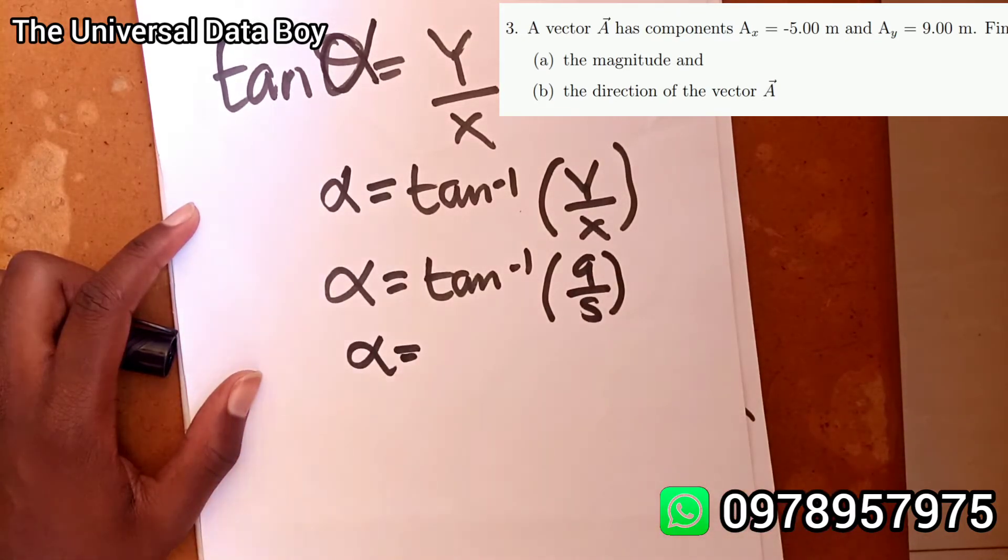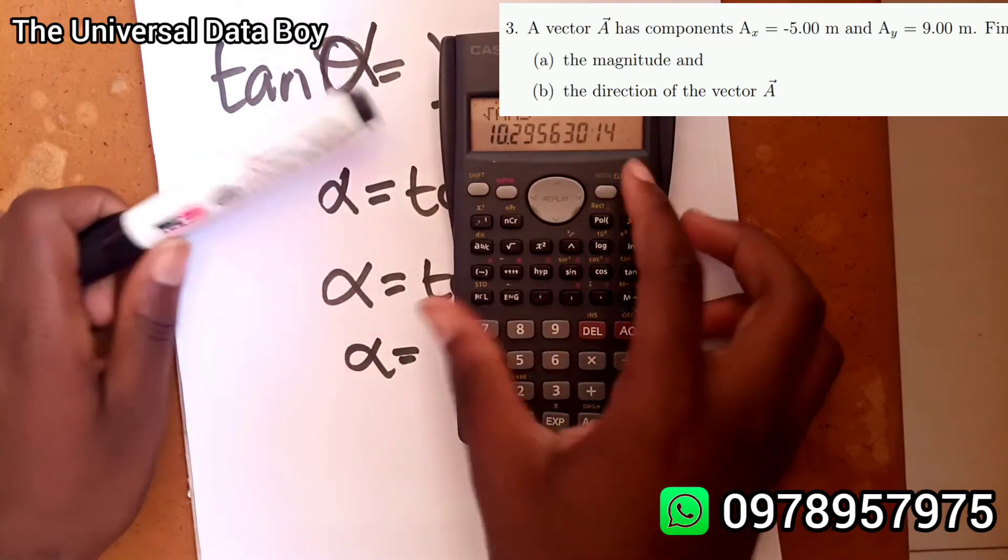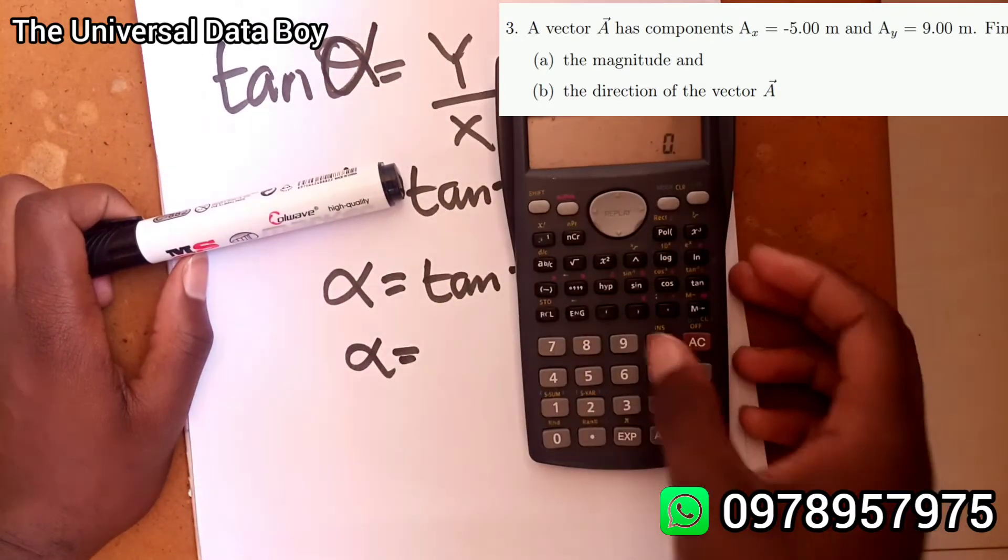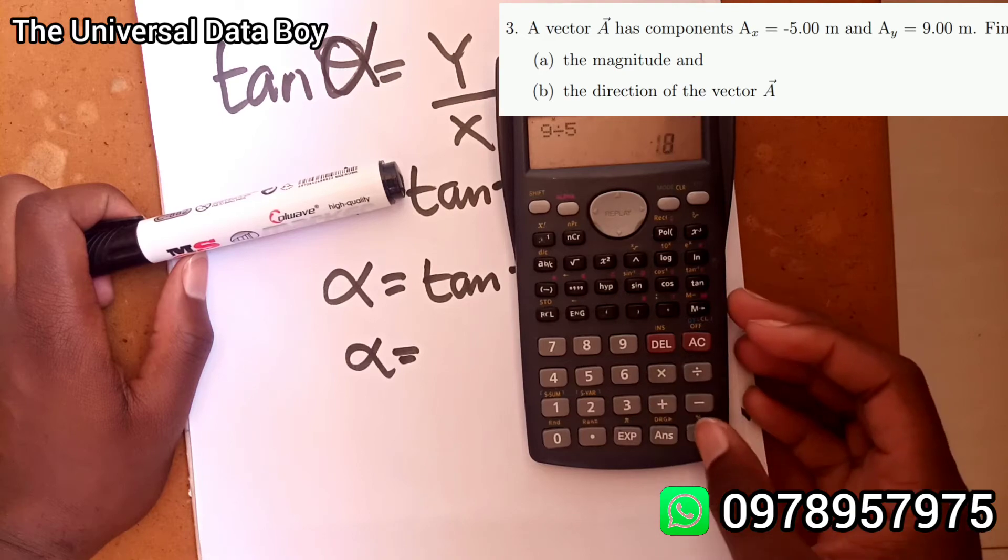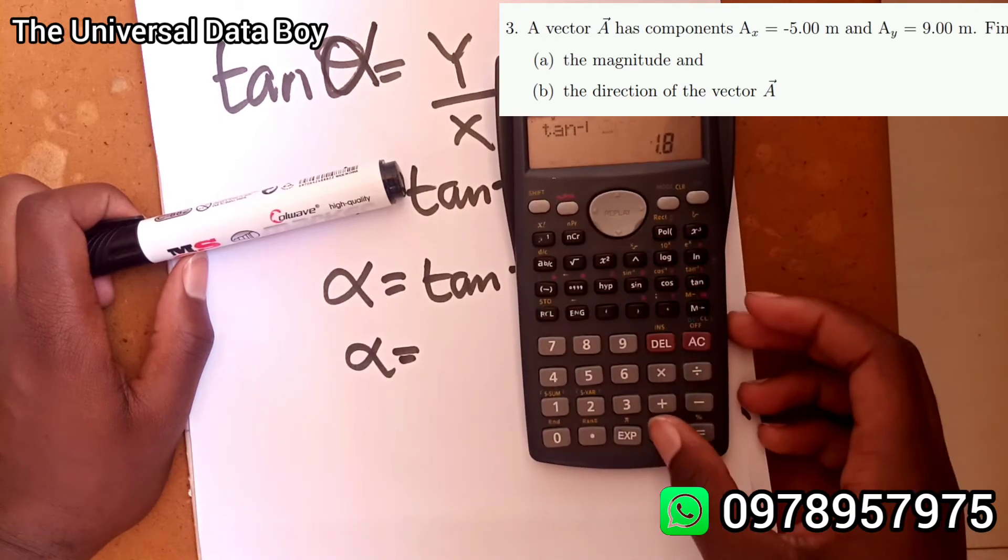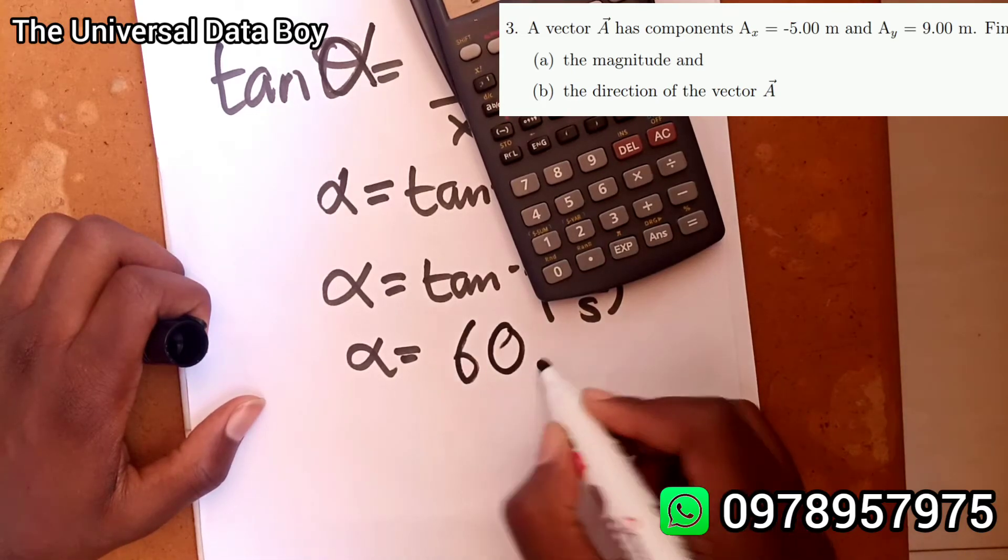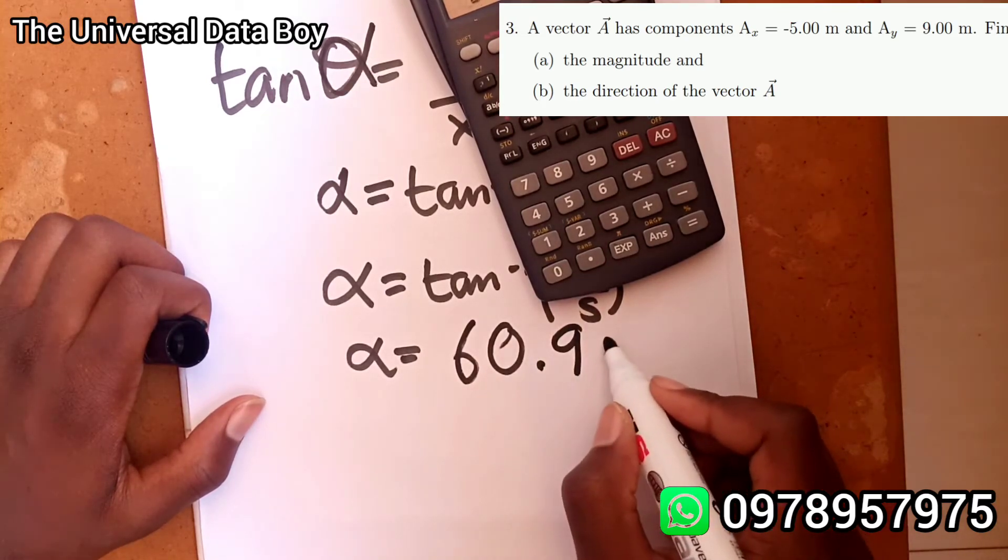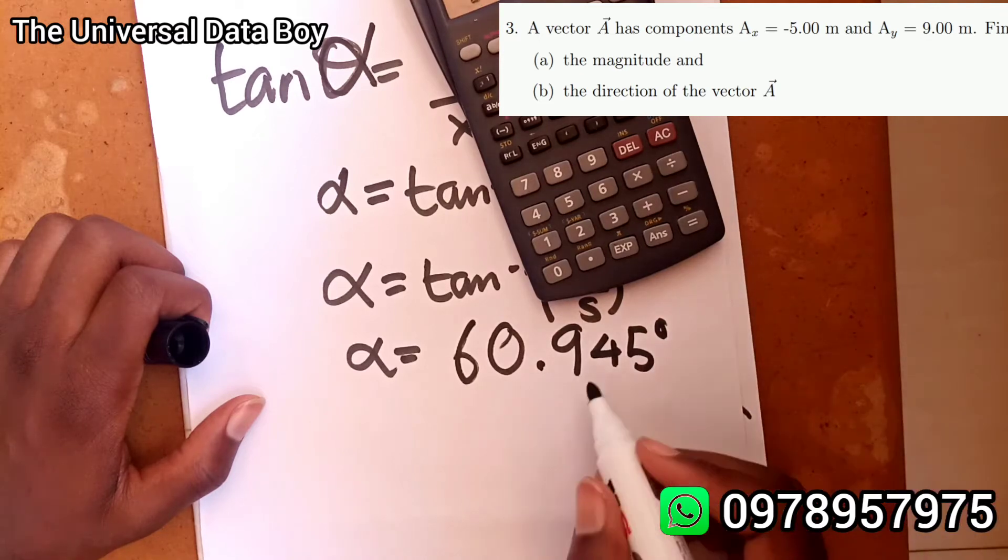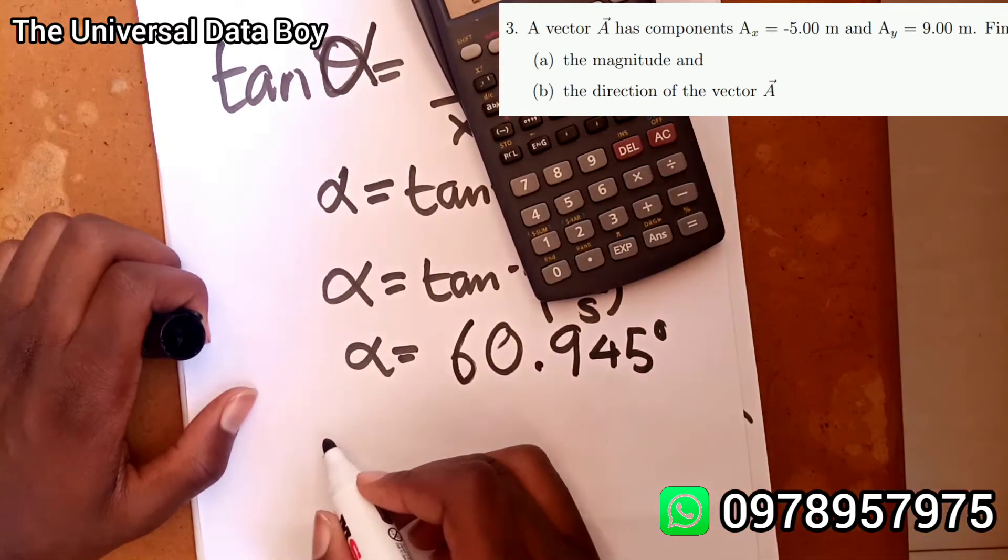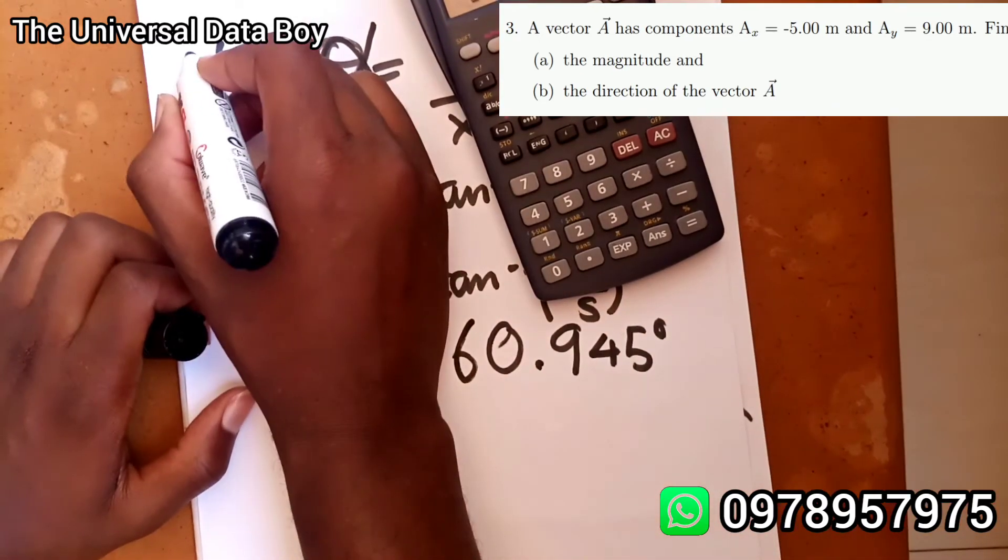Alpha is going to be equal to, we can get our calculator and punch 9 divided by 5, tan inverse of the answer. That's 60.945 degrees.